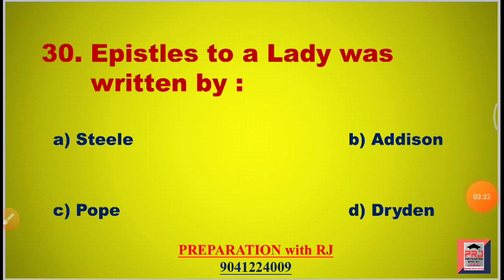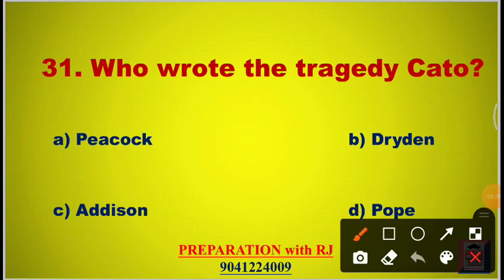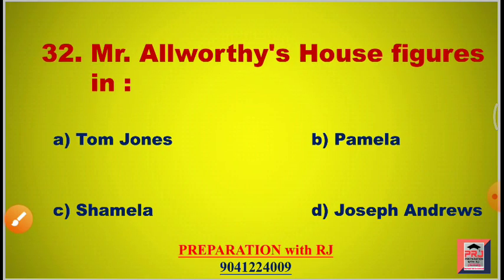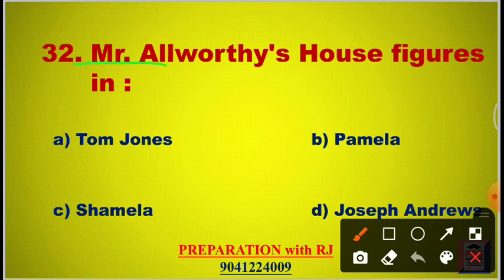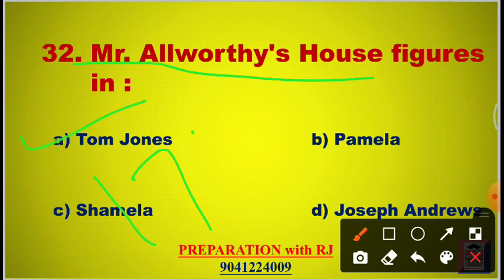Question 31: Who wrote the tragedy Cato? Options are Peacock, Dryden, Addison, Pope. The answer is C, Addison. Question 32: Mr. Allworthy is a figure in — options are Tom Jones, Pamela, Shamela, Joseph Andrews. The answer is A, Tom Jones, published in 1749.